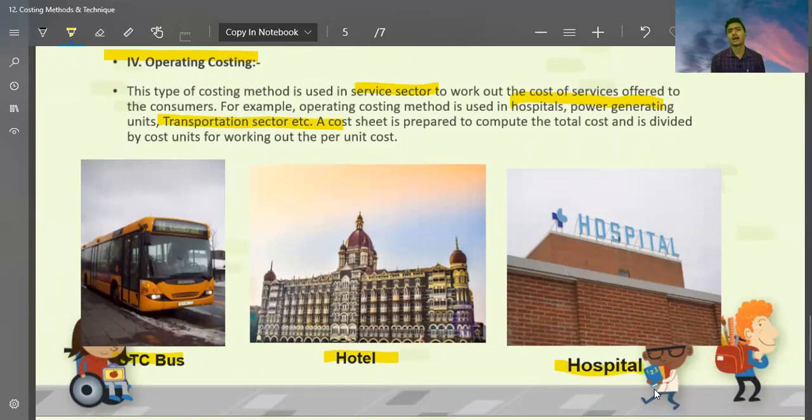Now, Ola, Uber, you also travel in taxis. What do you say? There is a cost of $6 or $7. How do they get it? They follow the cost of operating costing. This cost is calculated. In the hotel, per day is charged. In the hospital, per day is charged. Per bed is charged. Every bed is charged. The operating cost is followed.